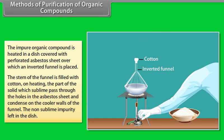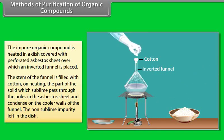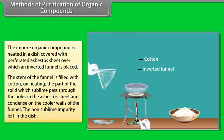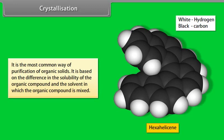The stem of the funnel is filled with cotton. On heating, the part of the solid which sublimes passes through the holes in the asbestos sheet and condenses on the cooler walls of the funnel. The non-sublimable impurities remain behind.